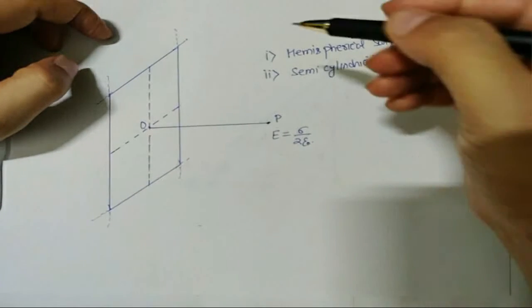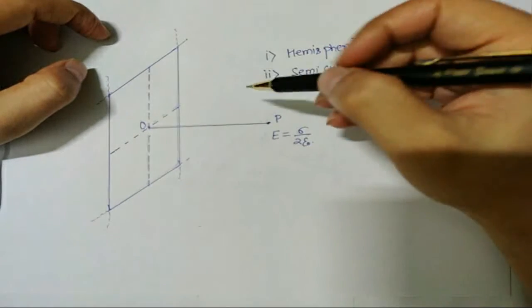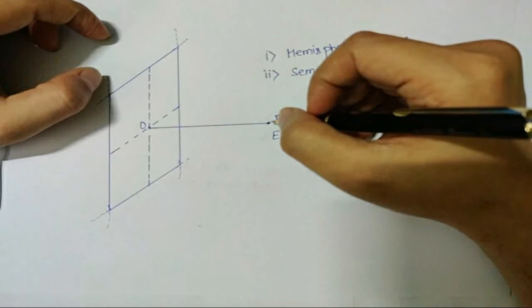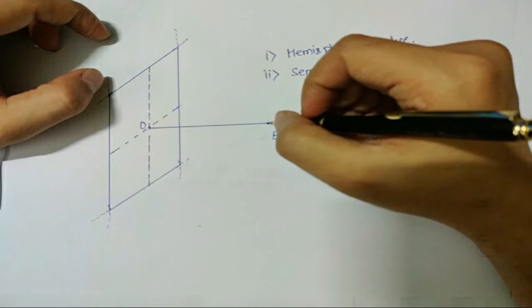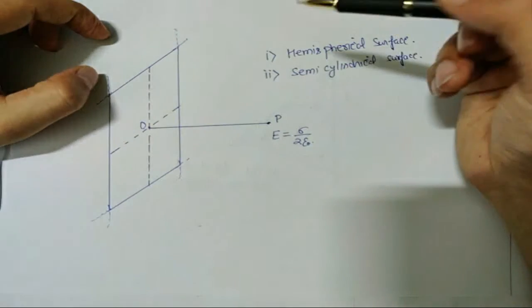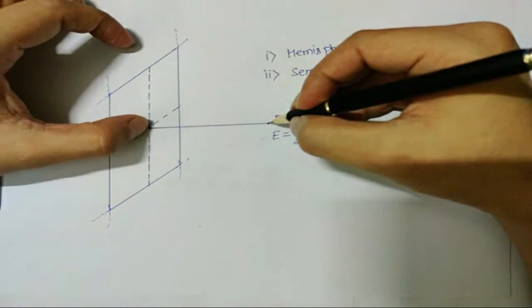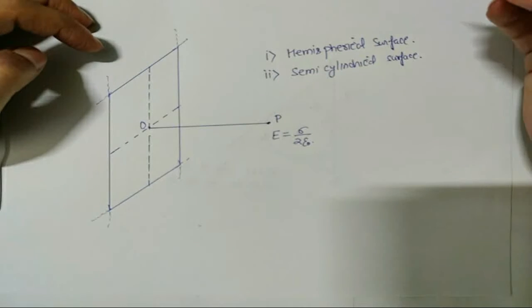The second option is we can take a semi-cylindrical surface. Now the orientation would be such that the axis of that cylinder will be passing through P and it will be parallel to the surface. The radius obviously of that semi cylinder will be again OP. Now I want you to